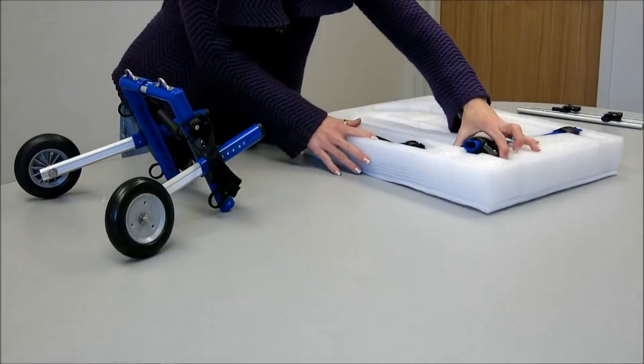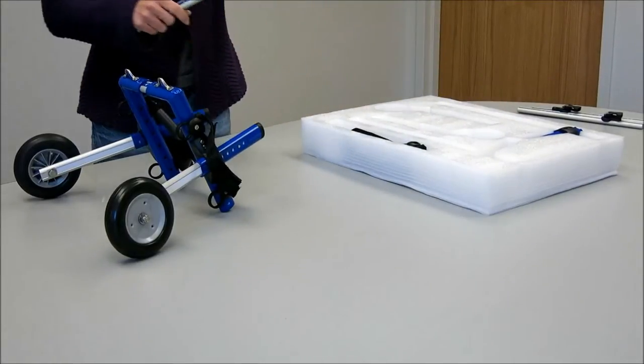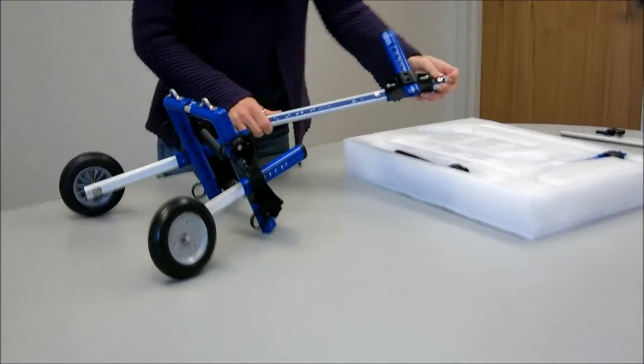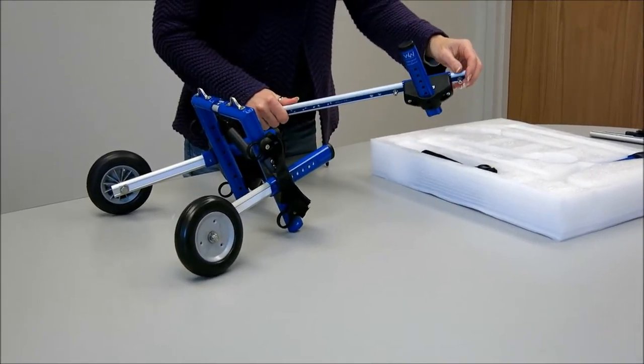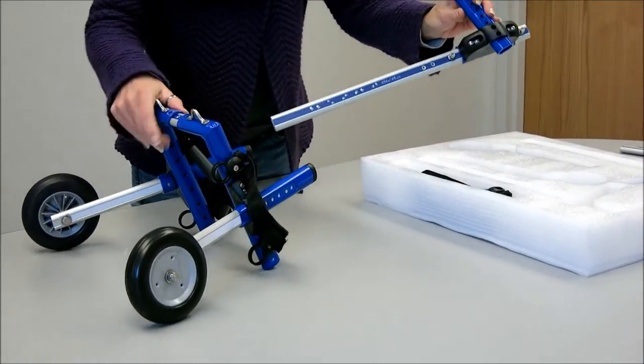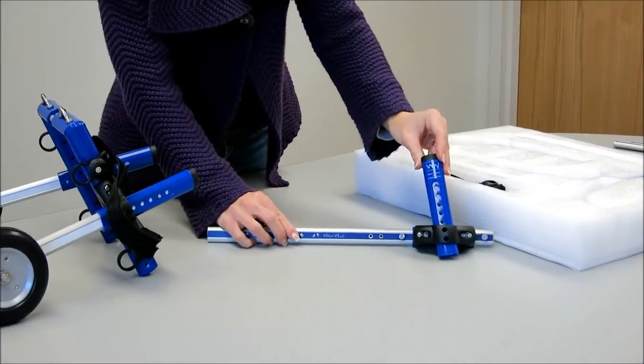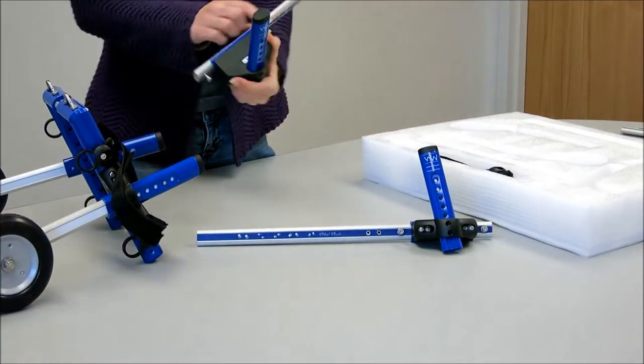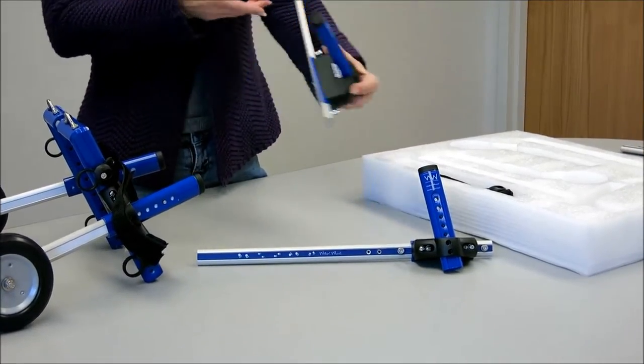Next, we take out the new side extenders. They're labeled left front, right front. Okay, so this one is right, the writing is on the outside. This one is left, labeled, writing on the outside.